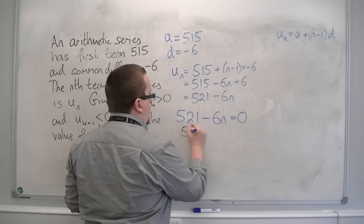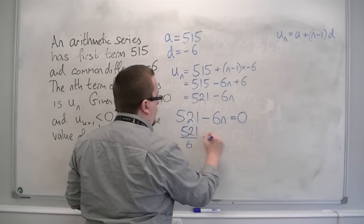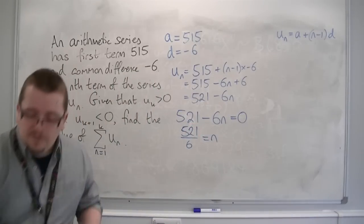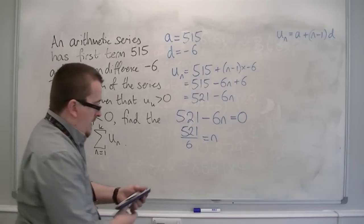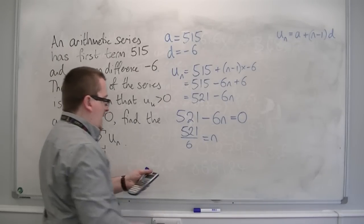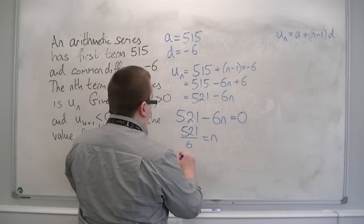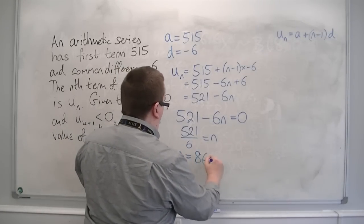So 521 - 6n = 0. So 521/6 = n. If I do that on the calculator, 521 divided by 6 is 86.83. So I get n is 86.8...